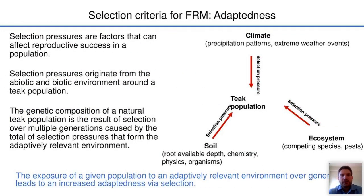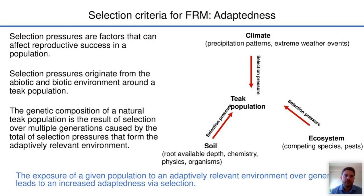Another selection criterion for reproductive material of teak is adaptedness. Selection pressures are factors that can affect reproductive success in a population, originating from the abiotic and biotic environment around a teak population — these could be the climate, soil properties, and the ecosystem involving competing species and pests. The genetic composition of a natural teak population is the result of selection over multiple generations caused by the total of selection pressures that form the adaptively relevant environment. The exposure of a given population to an adaptively relevant environment over generations leads to increased adaptedness by selection.